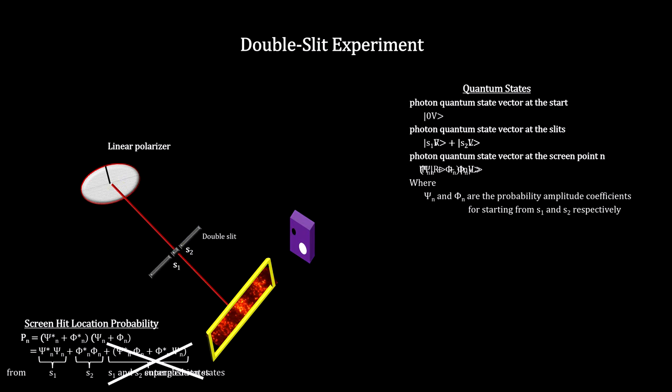Now, if we remove the quarter wave plates, we get back to superposition states and the interference pattern.